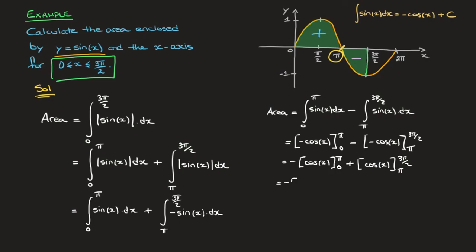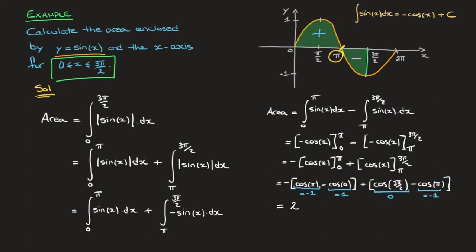Substituting values: cosine of pi equals negative 1, cosine of 0 equals 1, cosine of 3 pi over 2 equals 0, and cosine of pi equals negative 1. The first bracket gives negative 1 minus 1 equals negative 2, and with the negative in front it becomes 2. The second bracket gives 0 minus negative 1 equals 1. Therefore the enclosed area equals 2 plus 1, which is 3. That's the answer.